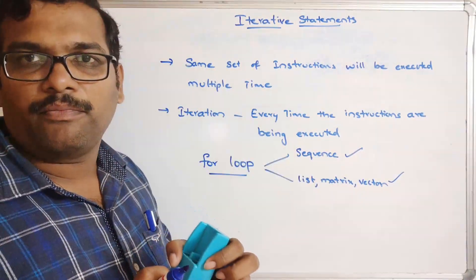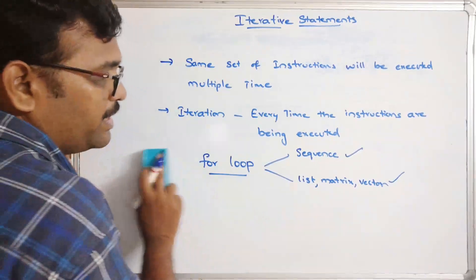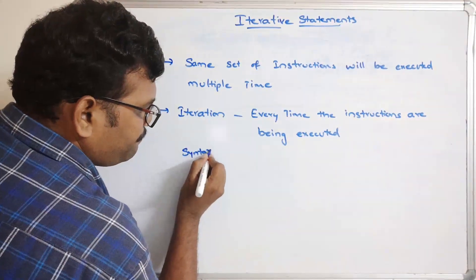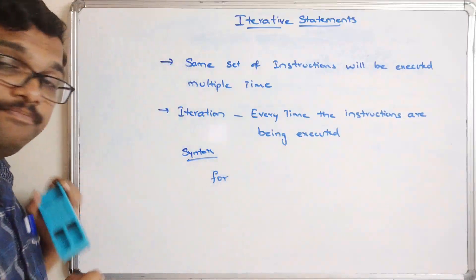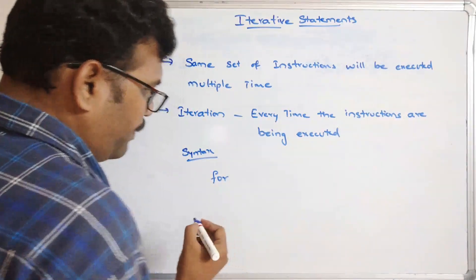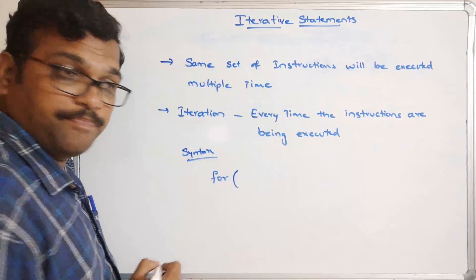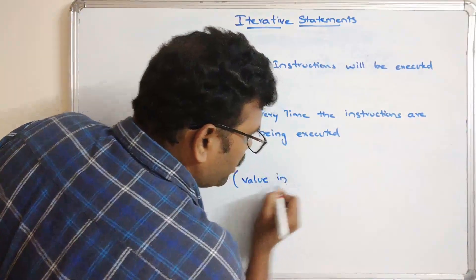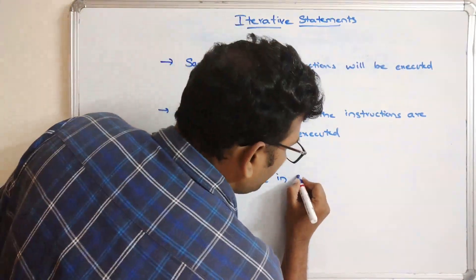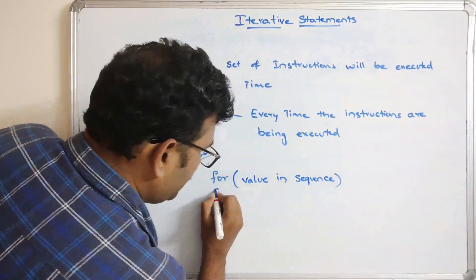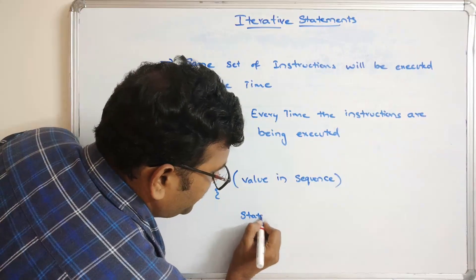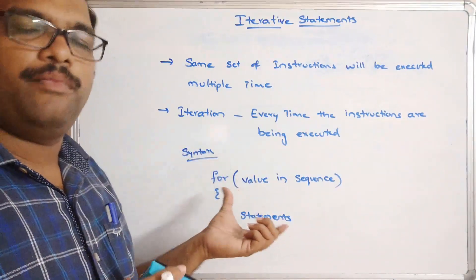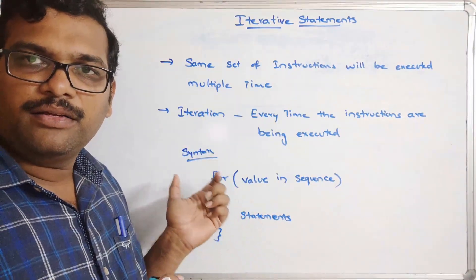We can use any one of these three data structures, or directly use a sequence. The syntax for a for loop uses the keyword 'for', followed by open parentheses, a value variable, the membership operator 'in', and then the sequence or data structure. Inside the curly braces, you write the statements to execute.